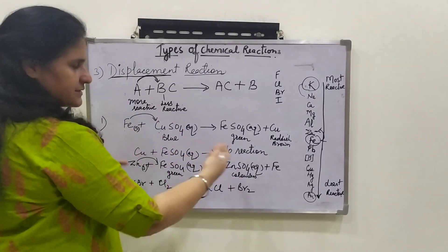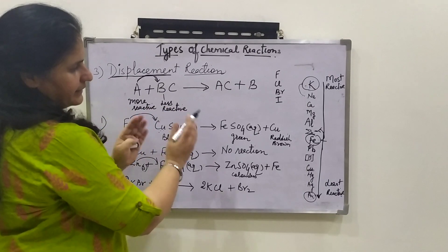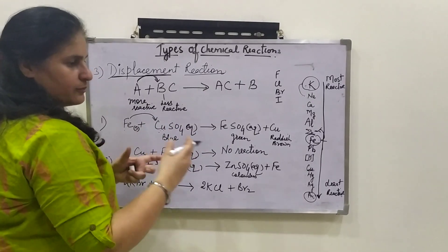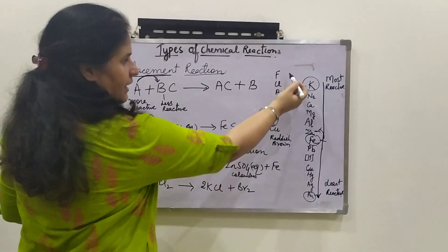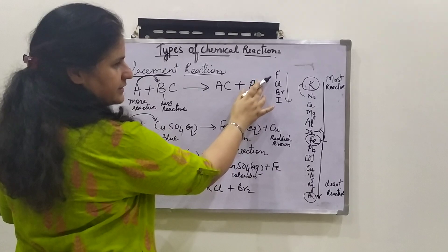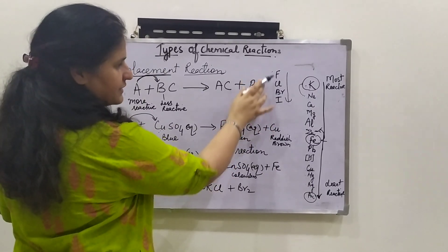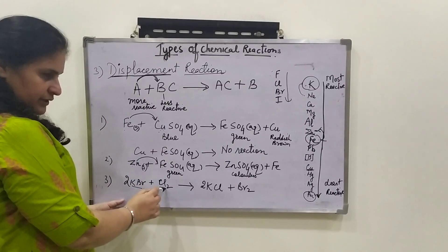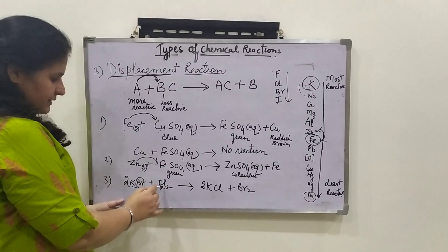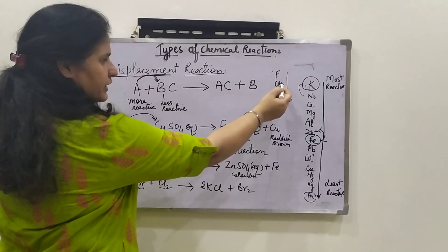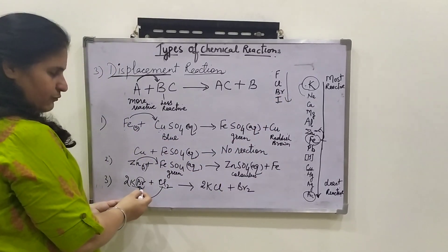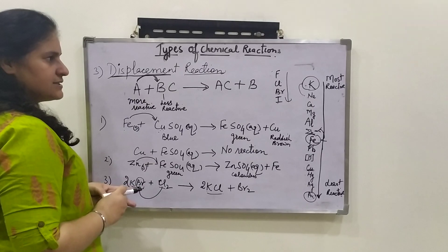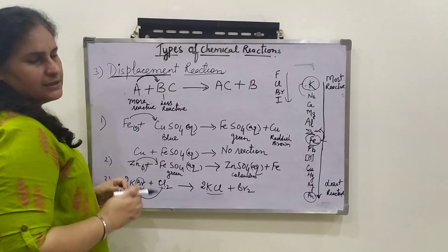In these examples you observed that a more reactive metal takes the place of a less reactive metal from its compound. But not only metals — a more reactive non-metal can also take the place of a less reactive non-metal. Here is a series of non-metals: fluorine, chlorine, bromine, iodine. Fluorine is the most reactive and iodine is the least reactive. For example, potassium bromide reacting with chlorine — chlorine is more reactive than bromine in the series, so chlorine takes the place of bromine. You get potassium chloride and bromine gas is evolved. So this displacement reaction is possible in both metals and non-metals.